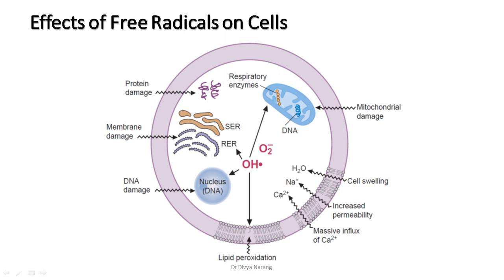The effects of free radicals on cells explain why we are concerned about them. Superoxide and the hydroxyl radical initiate lipid peroxidation in cellular, mitochondrial, nuclear, and endoplasmic reticular membranes. This results in increased cellular permeability, leading to a massive influx of calcium, which causes further mitochondrial damage. These superoxide and hydroxyl radicals form lipid peroxides, distorting the structure of membranes, leading to increased permeability so ions can move in, causing cell swelling.